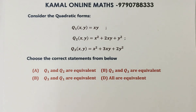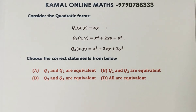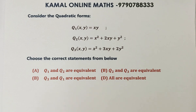Option 1: q1 and q2 are equivalent. Option 2: q2 and q3 are equivalent. Option 3: q1, q2, q3 are all equivalent. Option 4: All of q1, q2, q3 are equivalent quadratic forms. So let's understand what equivalent quadratic forms means.